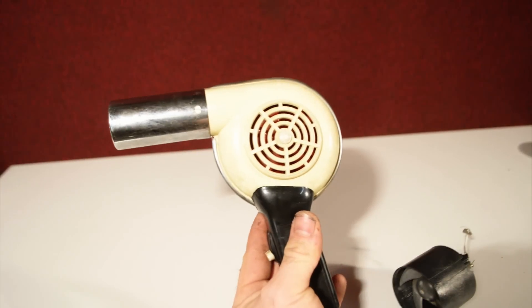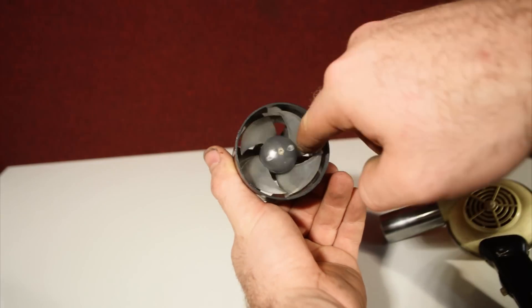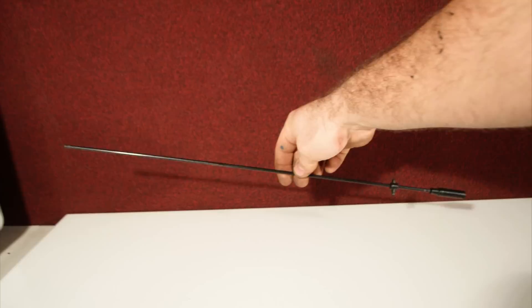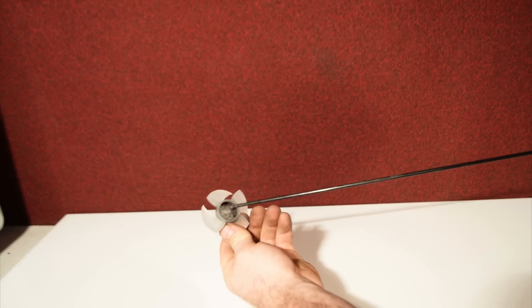While the glue dries, I took apart this hair dryer. Inside of it I found this very nice fan, this will become the propeller of the boat. Now I take a piece of plastic rod and I can insert it inside the fan, the propeller, like this.